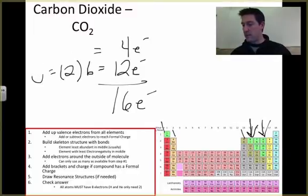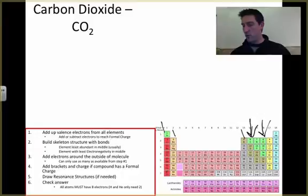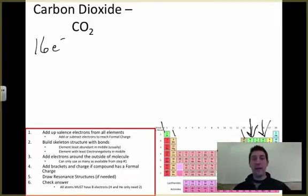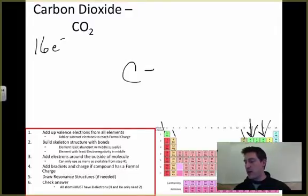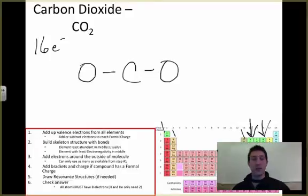Now I'm going to get rid of this just so I have a little more room to draw this out. So I put my carbon in the middle because of the electronegativity of carbon compared to oxygen, and I've got to bond that to my oxygen. I'll just put them like this. I think it's easiest to start just putting them off to the side, and if we need to move them around later, we can do that. I've used 2, 4 electrons.